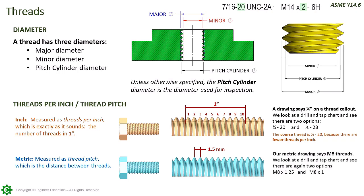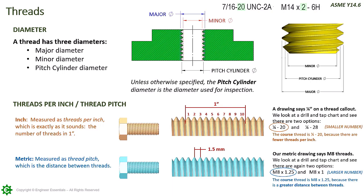For a similar situation on a metric drawing where the thread callout only says M8, looking it up on a drill and tap chart shows two options: M8 by 1.25 and M8 by 1. Since metric threads are measured as thread pitch — the distance between threads — the coarse thread is M8 by 1.25, because there is a greater distance between threads. A larger distance between threads means the thread pitch is more coarse. For ISO and metric threads, the larger number is the coarse thread.